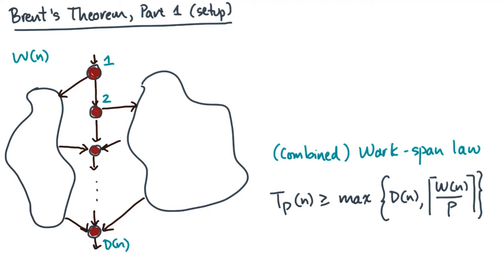The work and span laws tell you something about the minimum possible time. But I want you to ask yourself a more interesting question: Is there an upper bound on the time to execute the DAG?